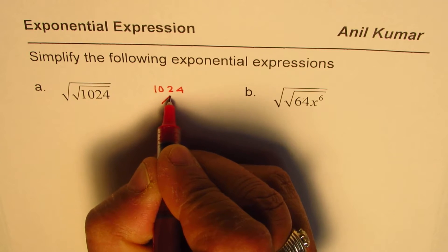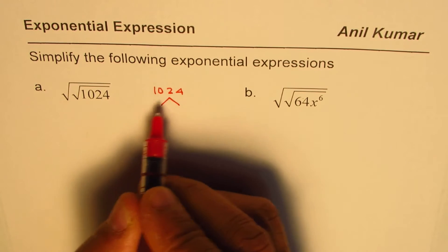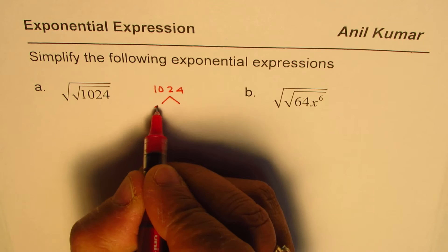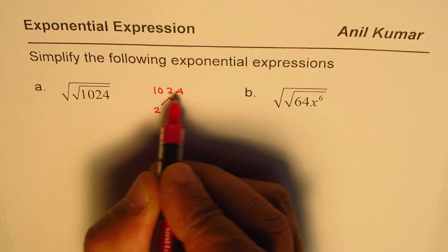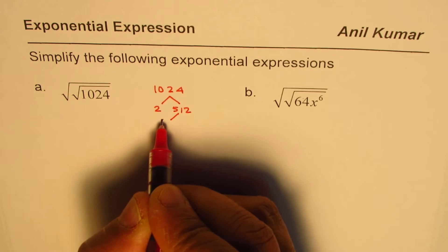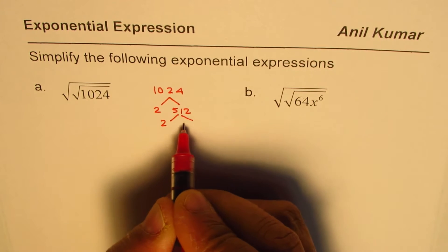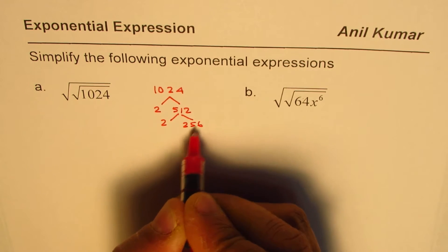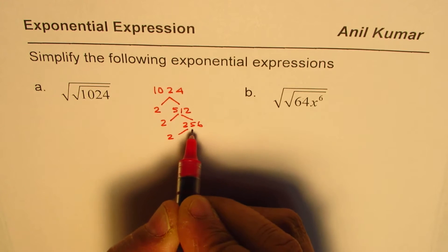So what we can do is find prime factors of this number. So it is 2 times... 1024 divided by 2, you get 512, then again divide by 2, you get 256, and again divide by 2.